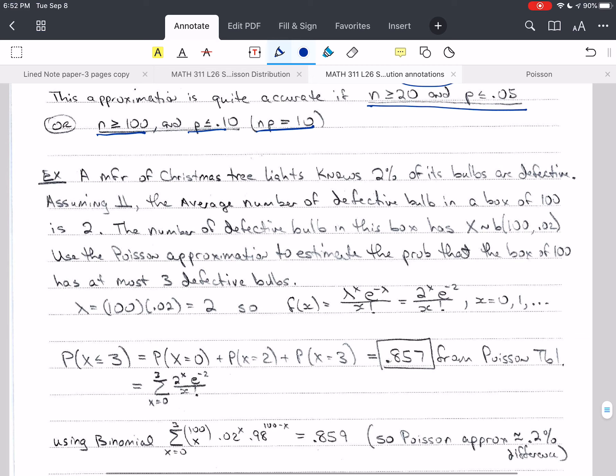So let's do an example of a manufacturer of Christmas tree lights, and this manufacturer knows that 2% of its bulbs are defective. If we assume independence of the bulbs, and the average number of defective bulbs in a box of 100 then is going to be 2. And the defective bulbs have a binomial distribution in 100, 0.02 as the probability, 2 over 100. We want to use the Poisson approximation to estimate the probability that the box of 100 has at most 3 defective bulbs.